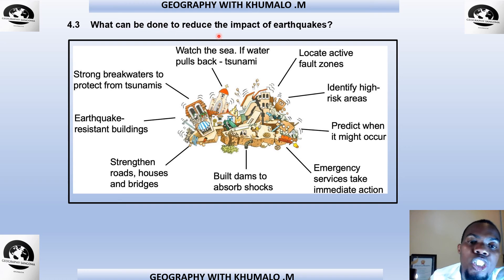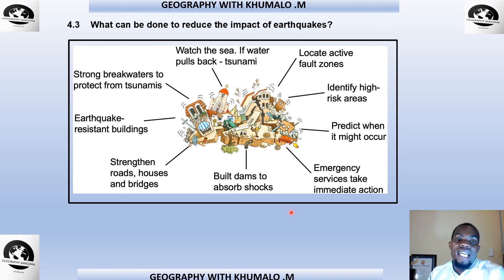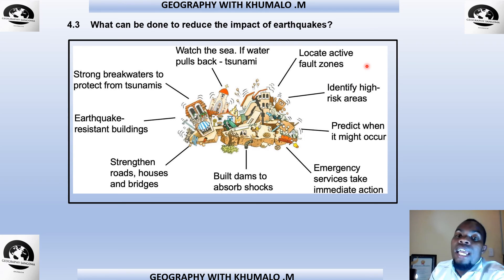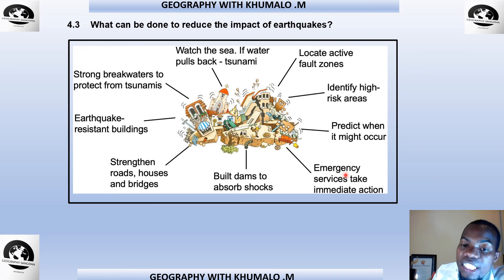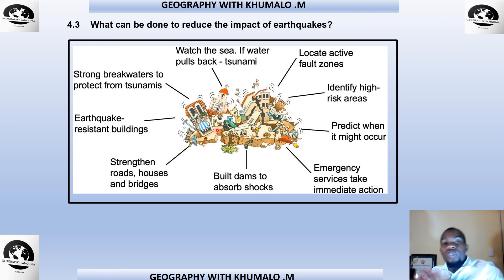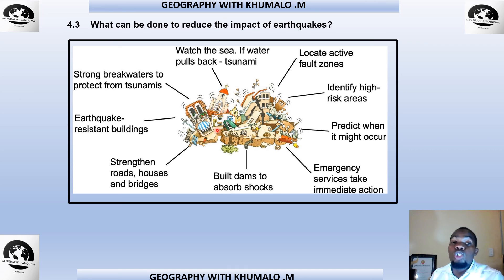What can be done to reduce the impact of earthquakes? Watch the sea — if water pulls back, it signals a tsunami. Locate active fault zones and identify high-risk areas. Predict when earthquakes might occur so emergency services can act. Build dams to absorb shocks. Strengthen roads, houses, and bridges. Construct earthquake-resistant buildings. We cannot stop earthquakes, but we can reduce their impact and consequences.